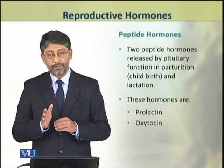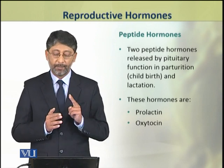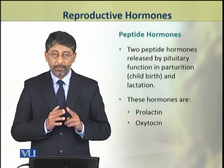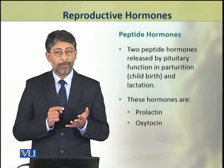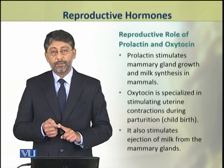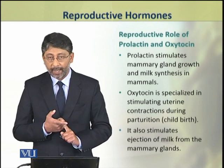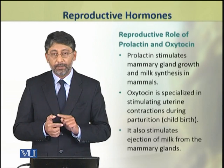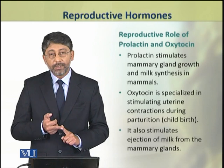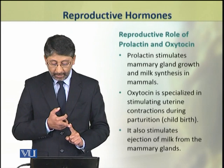In addition to steroid sex hormones, two peptide hormones also play an important role during parturition and lactation. These hormones are prolactin and oxytocin. Prolactin stimulates the development and growth of mammary glands and milk synthesis in mammals. Oxytocin plays a specialized role during parturition.